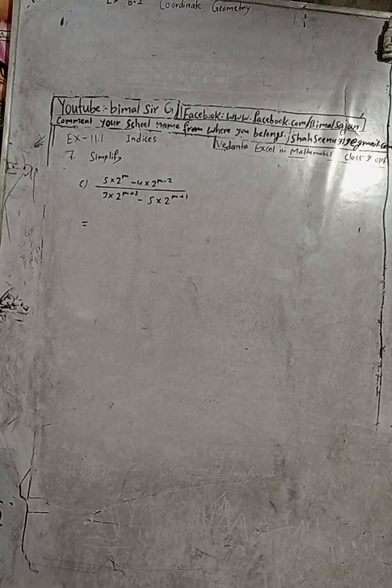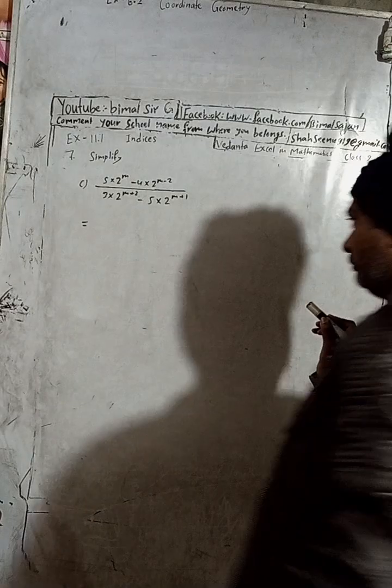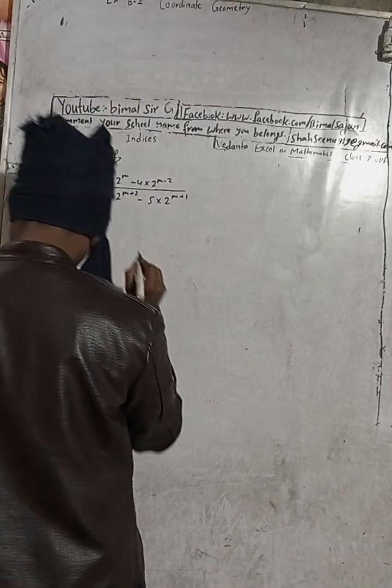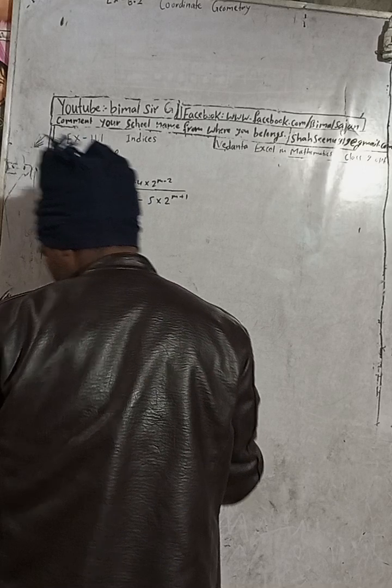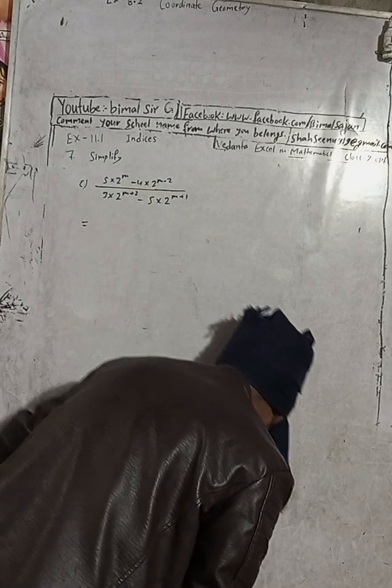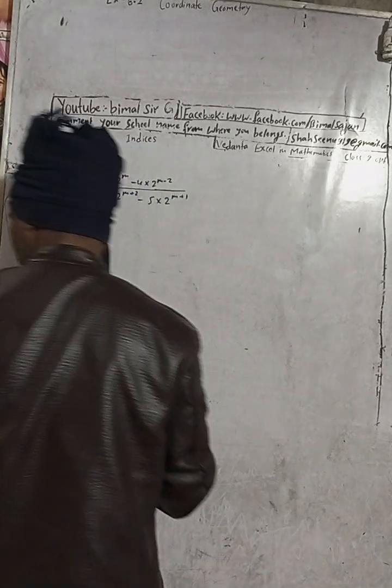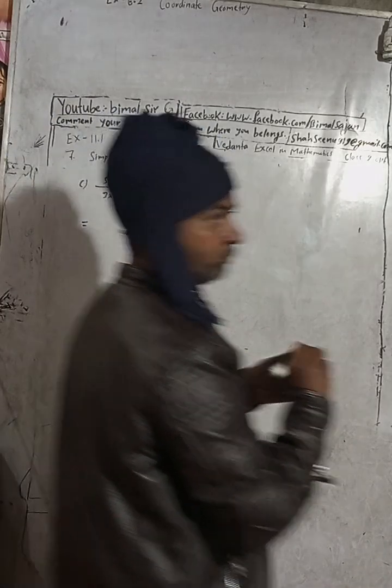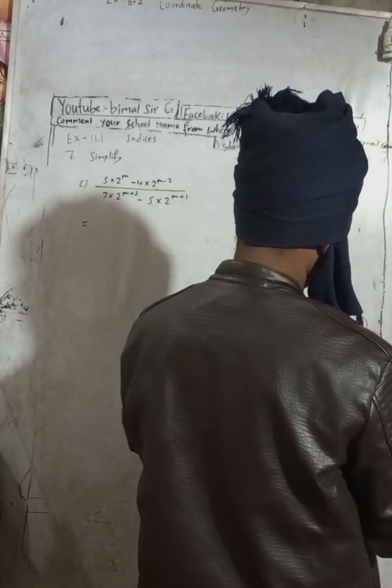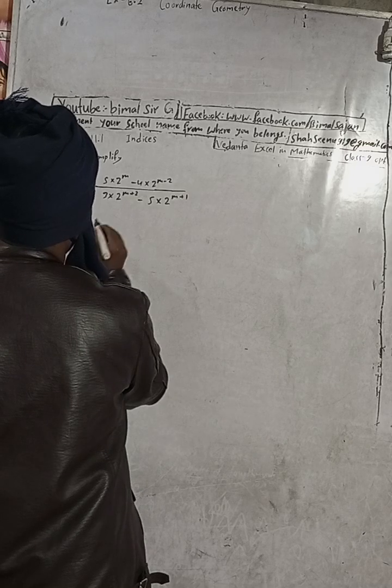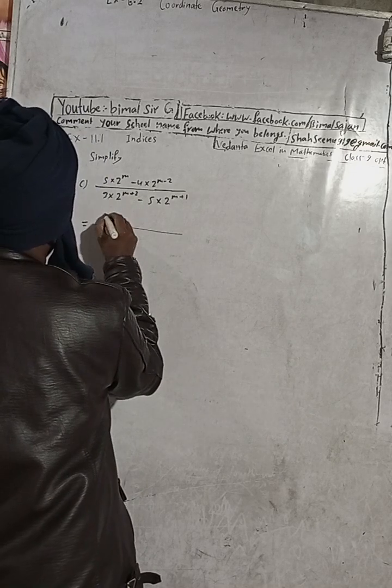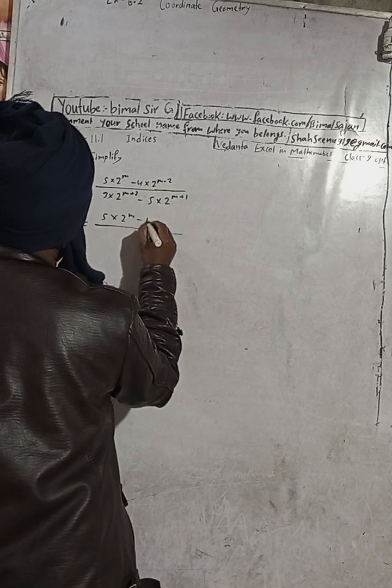This is question number 7C. Here this can be written as 5 into 2 to the power 1 minus this 4.